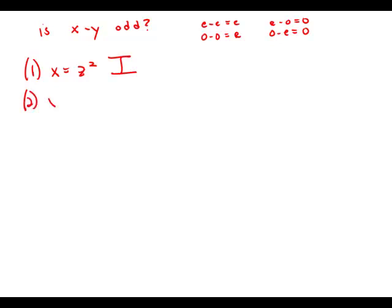Statement two tells us that y equals z minus one, squared. This equation tells us nothing about x. We have no information about x. So this statement by itself is insufficient.